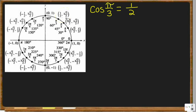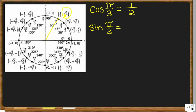Next, we can do the sine of pi over 3. Once again, you go to the angle pi over 3, go to that point, and find the second coordinate, which is going to be sine. In exact terms, the sine of pi over 3 is the square root of 3 over 2. This can't be simplified anymore — we have a square root on top and a simplified denominator.